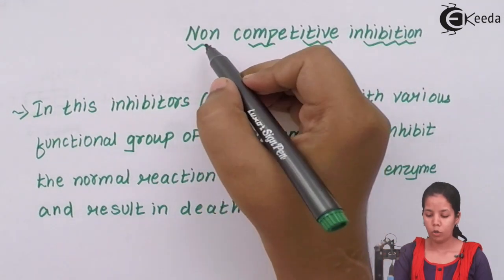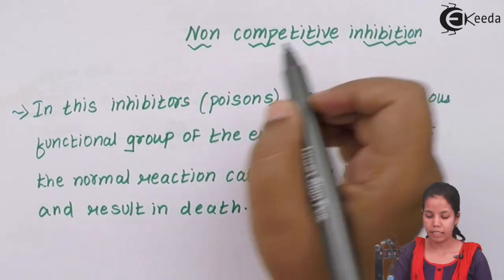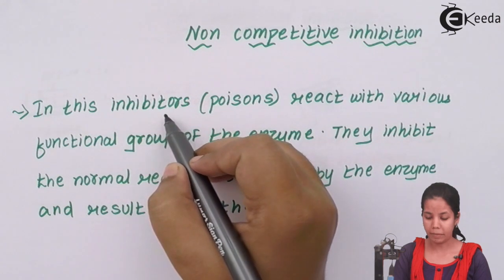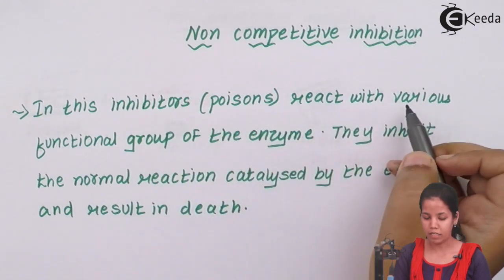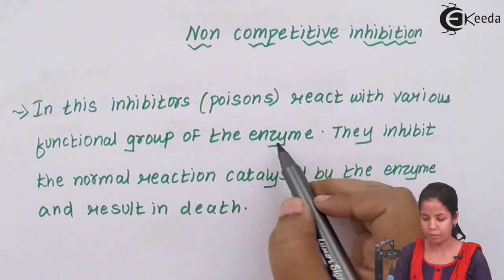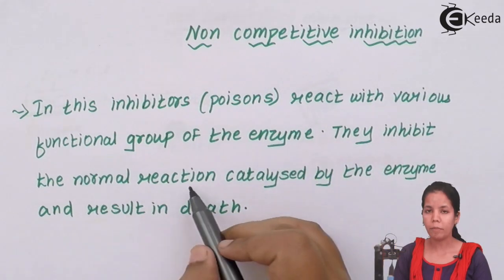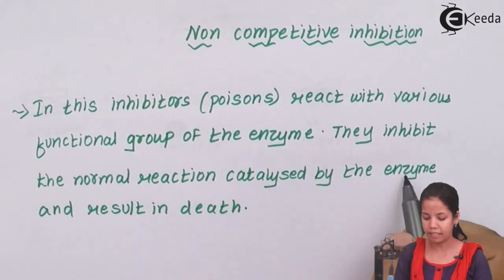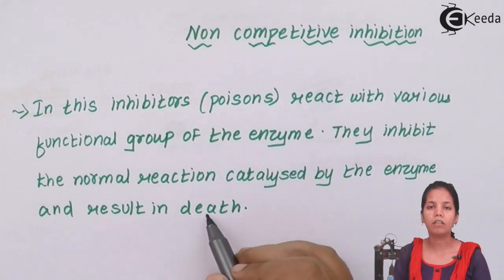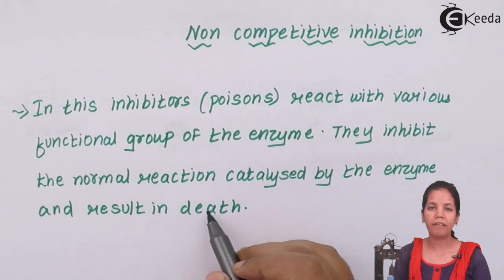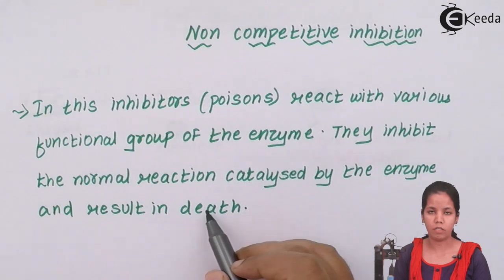In non-competitive inhibition, poisons react with various functional groups of an enzyme, inhibiting the normal reaction catalyzed by the enzyme, and the result is death. There is no fighting between the substrate and the inhibitor — the inhibitor directly binds to the enzyme. An example could be various poisons.